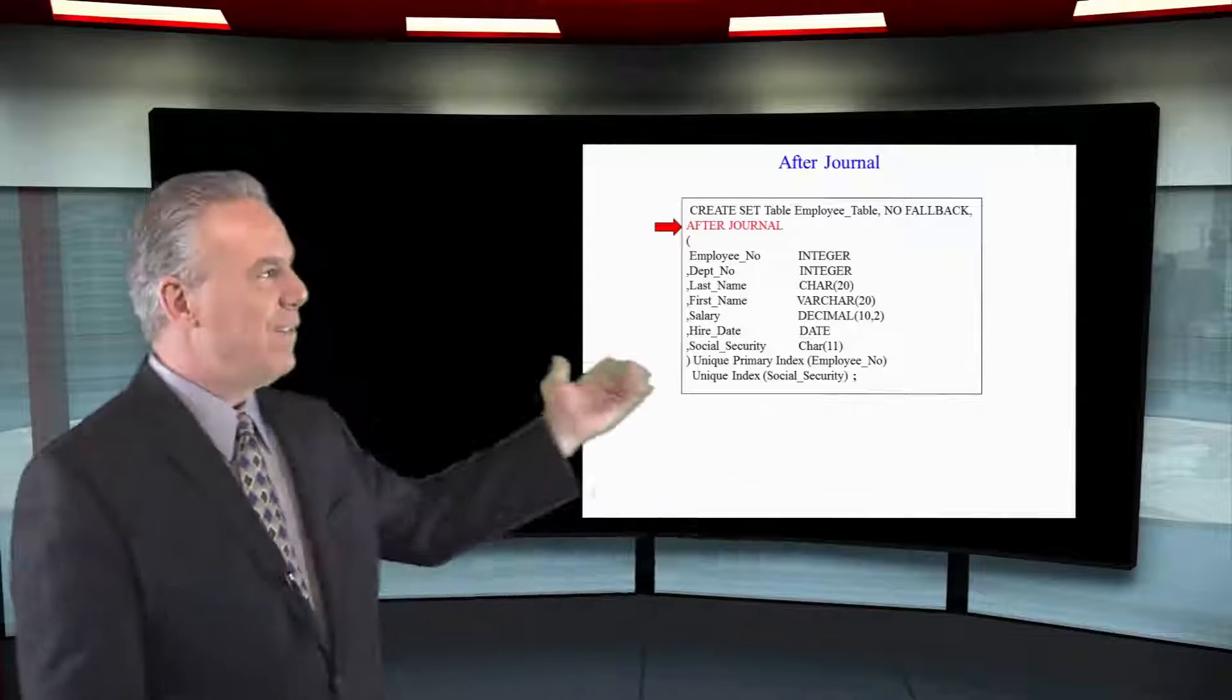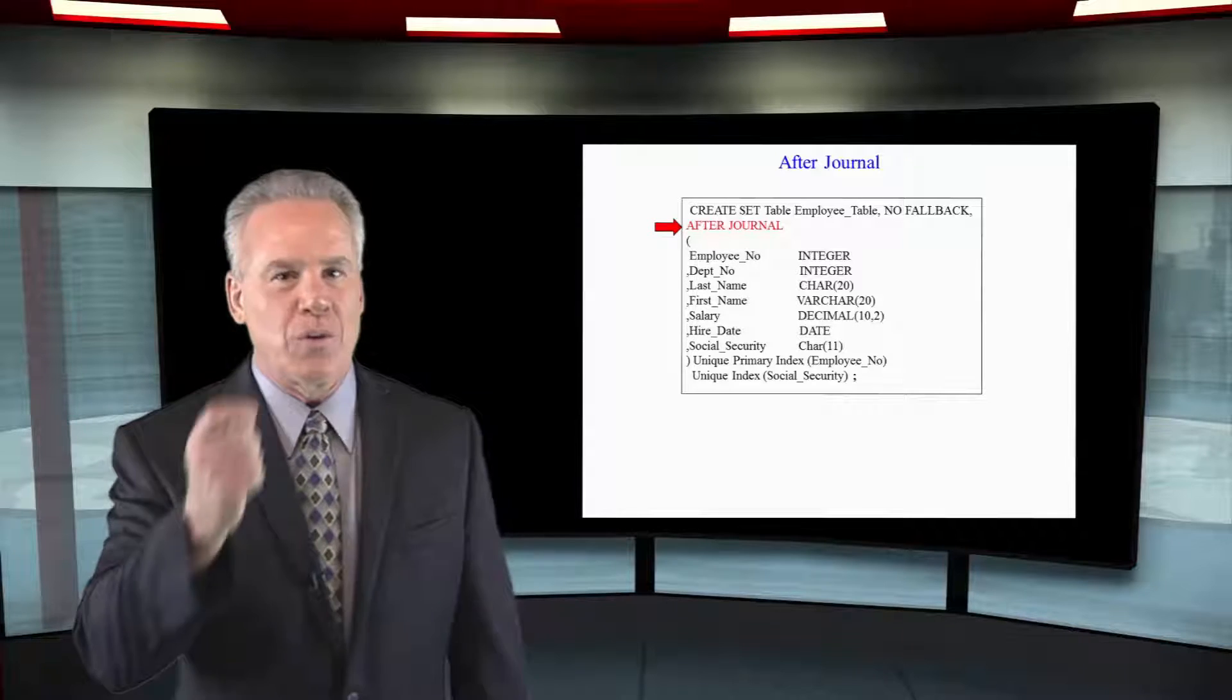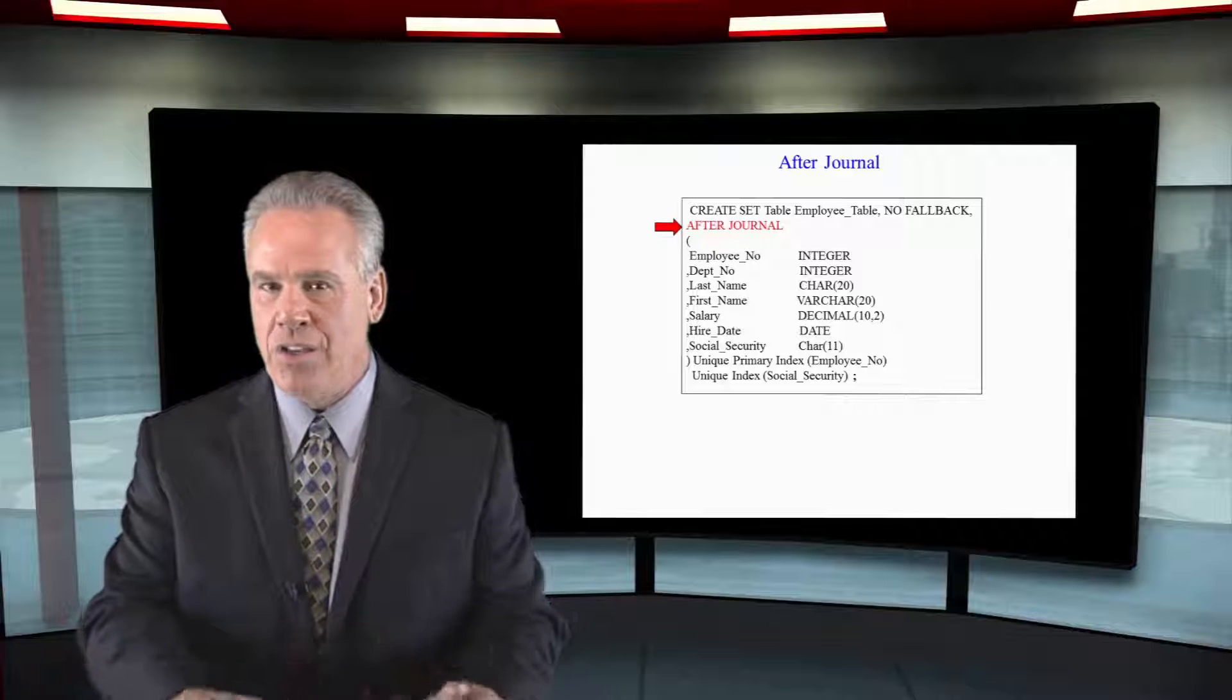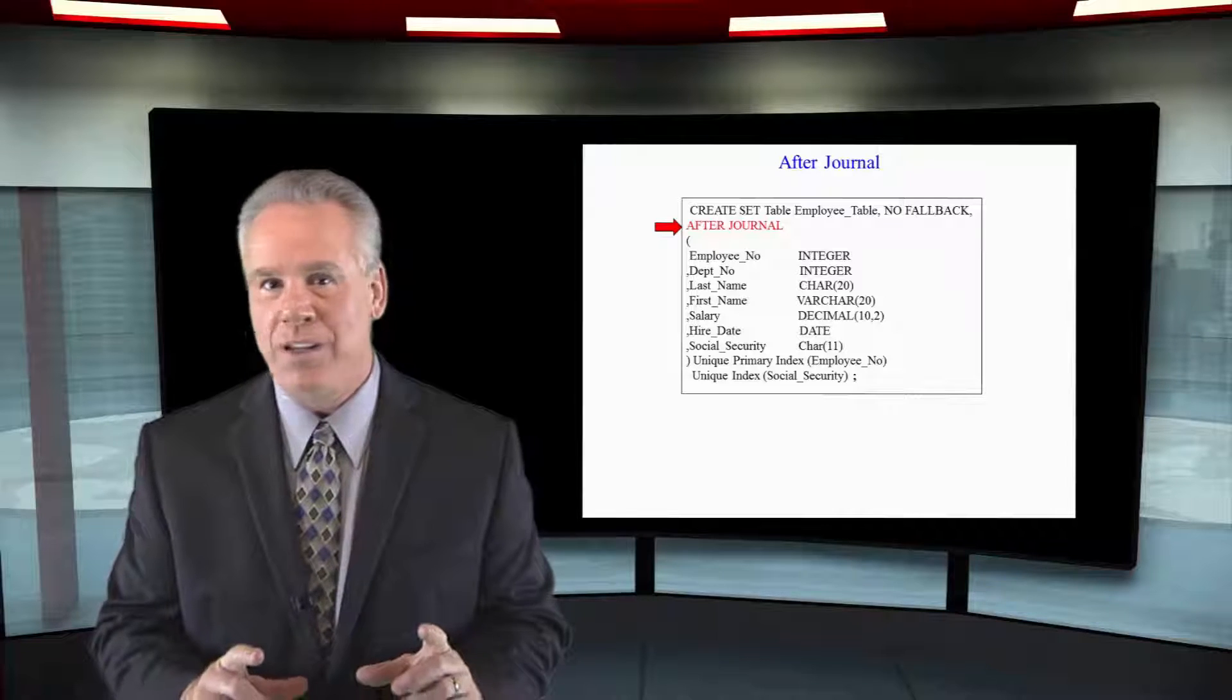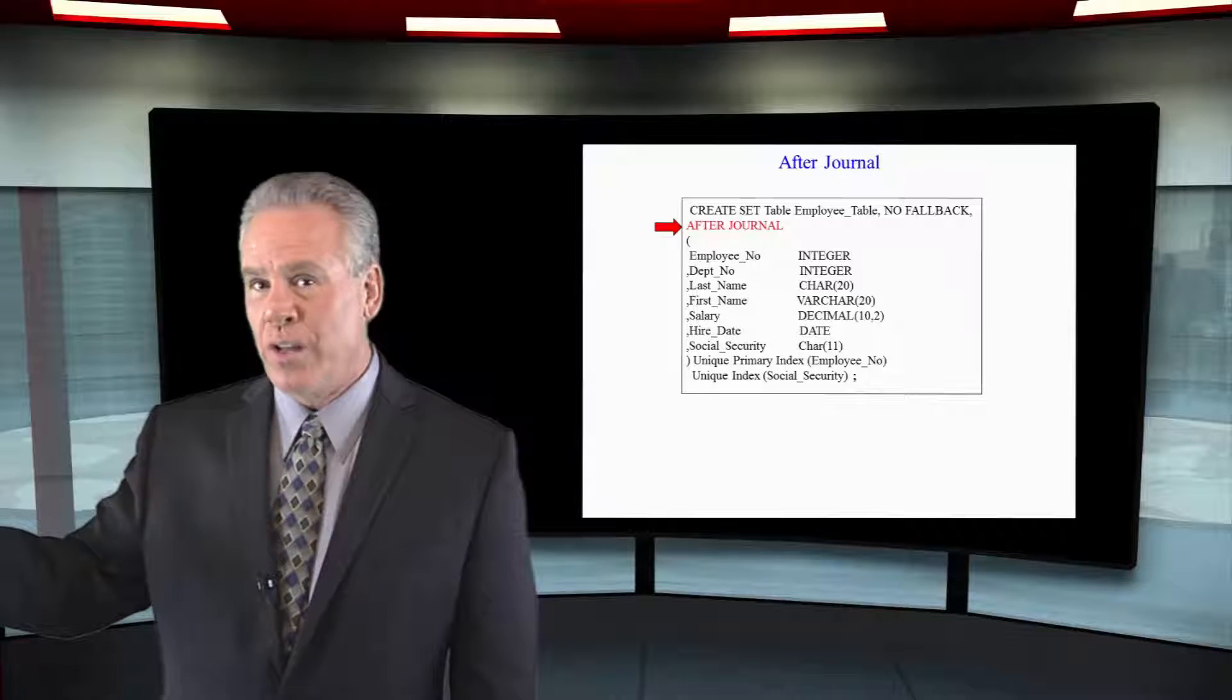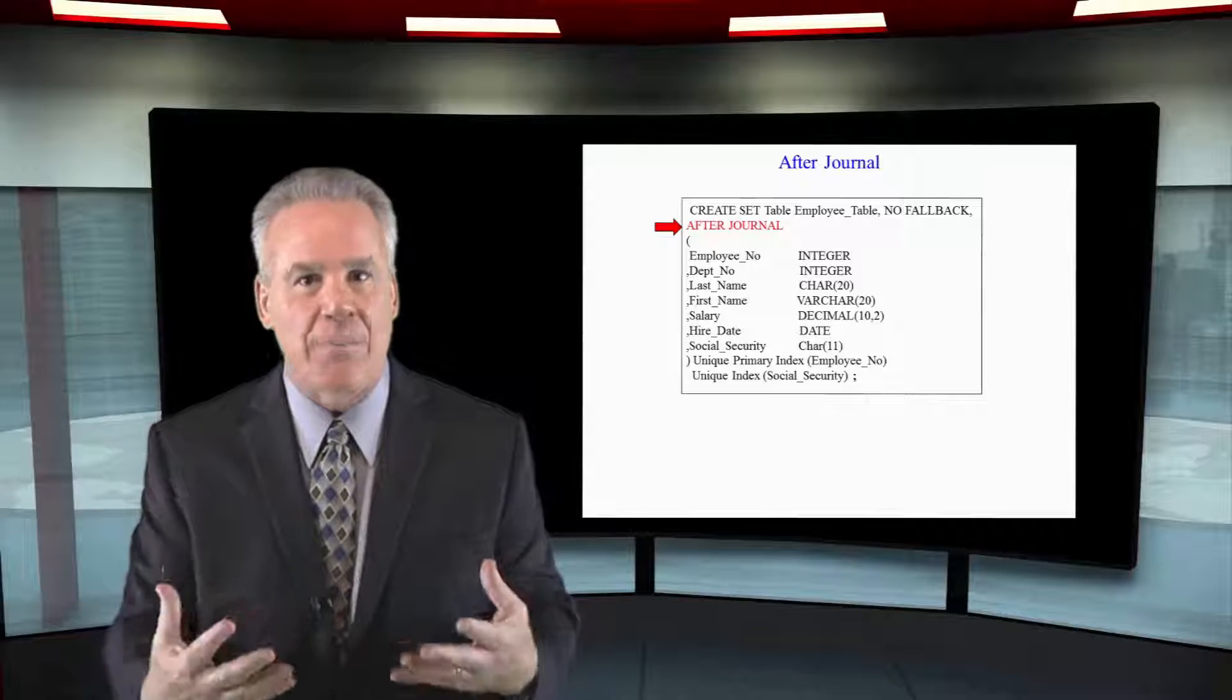In this case, I'm asking for an after journal. These are permanent journals. Before, after, those are permanent journals. So anytime there's a transaction, an insert, an update, a delete, I want you to take a picture after the row has been inserted, updated, or deleted, and you save it to that permanent journal area. We'll back that up and we will use this as part of our backup solution.